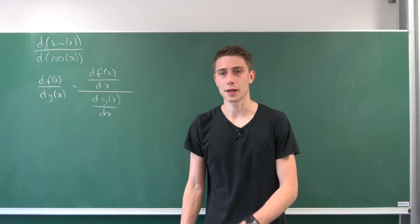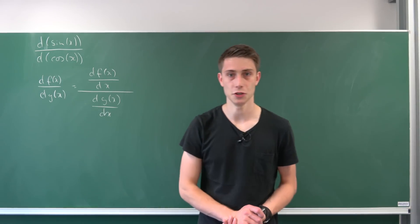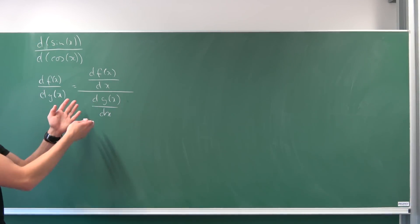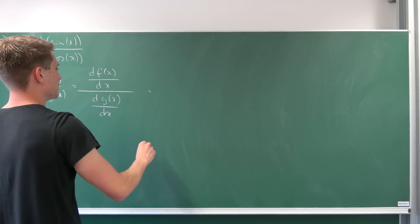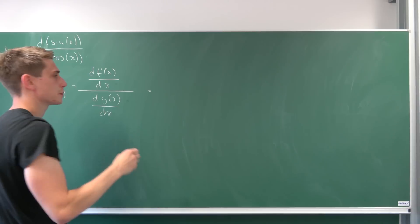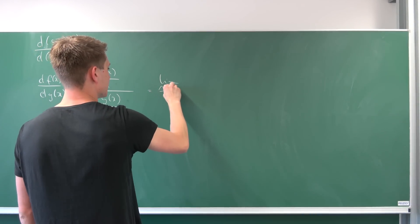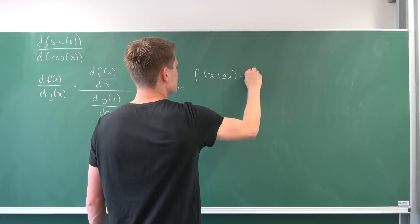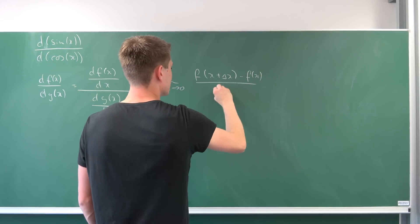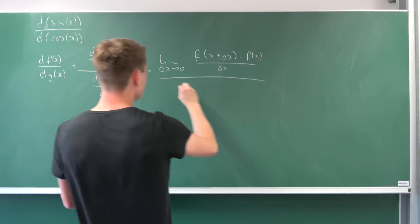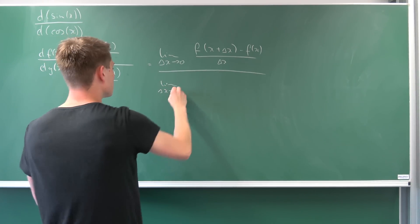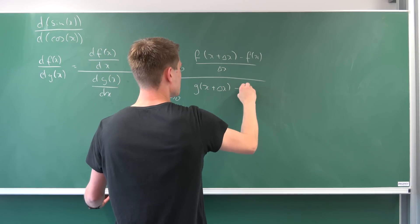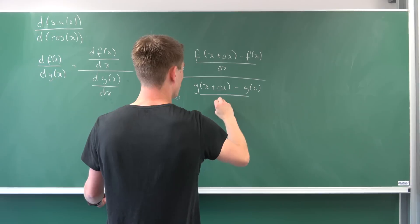Now for the third way: we are going to use the limit definition of the derivative. We just need to plug things in. The derivative of f(x) with respect to x is the limit as delta x approaches 0 of [f(x + Δx) − f(x)] / Δx, over the limit as delta x approaches 0 of [g(x + Δx) − g(x)] / Δx.